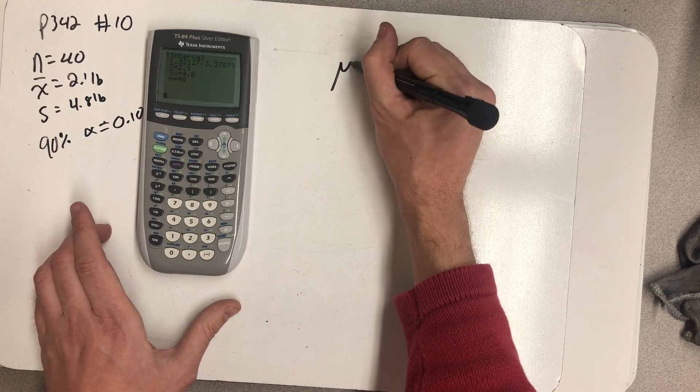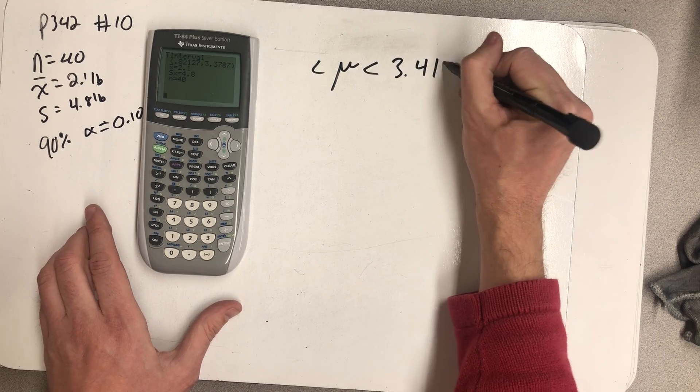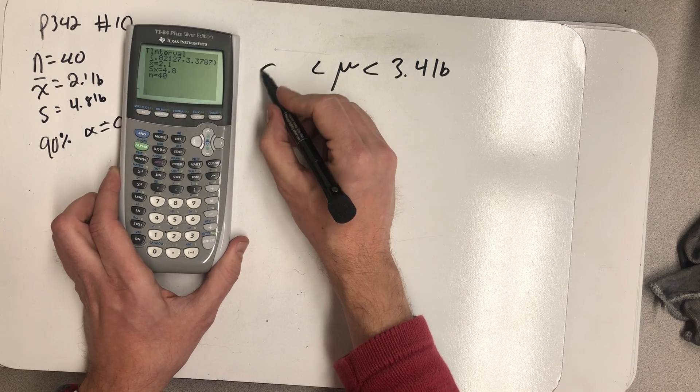And we get a confidence interval between 3.4 pounds and 0.8 pounds.